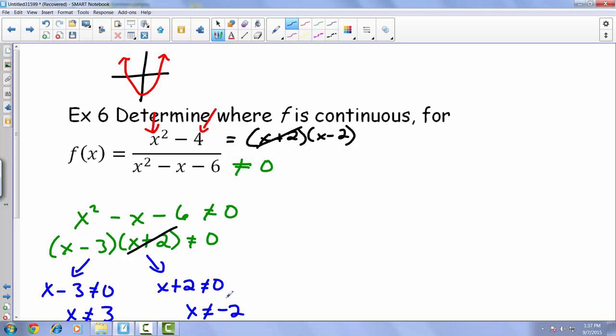But again, this is not a piecewise function. Example 6 is just a normal rational function. But it is important to kind of know how those piecewise interrelate with continuity. So again, that is example 6 from our 1.4 set of notes.